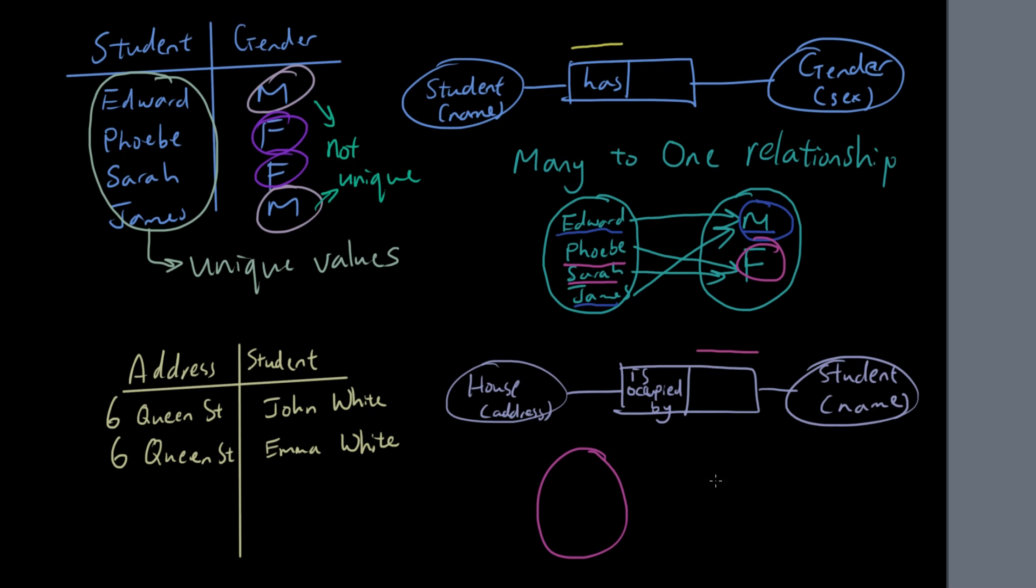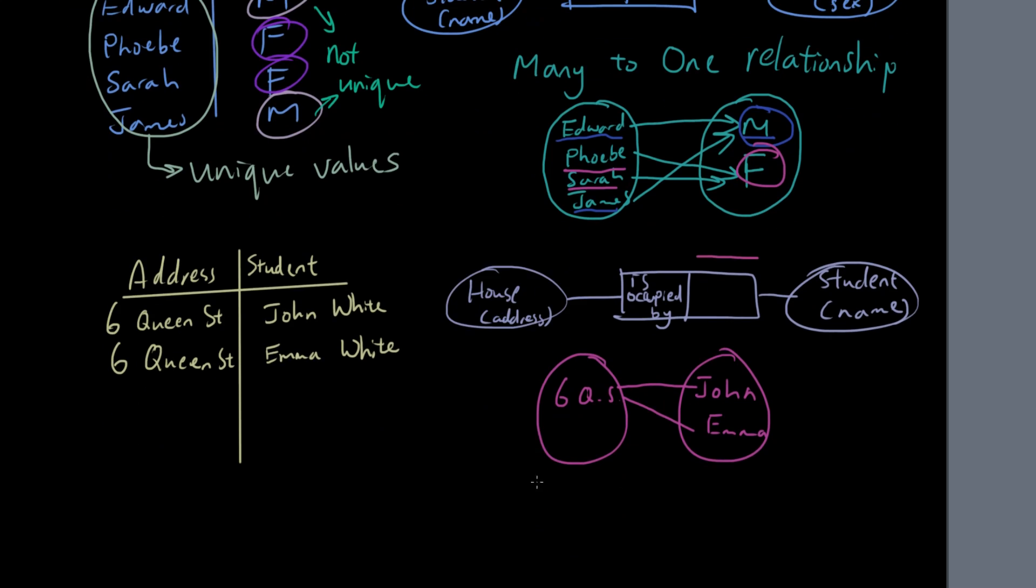And then in this other case, we've got one thing here, 6th Queen Street, and then we've got many things on the right, John and Emma, and we have many things pointing to one thing. So that's why this is a one to many, one to many relationship.